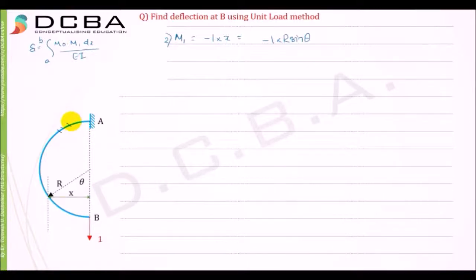What is dx? dx is basically small parts of your entire beam. These small parts are called dx. Let's say there's a small part here.